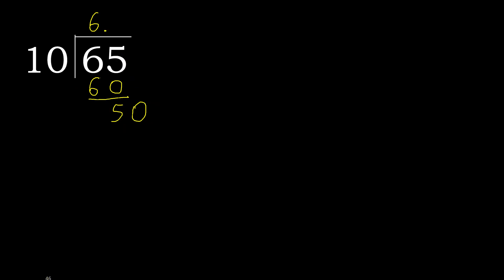50. 10 multiplied by 5 is 50. 50 is not greater. Subtract — 0. Therefore finished.